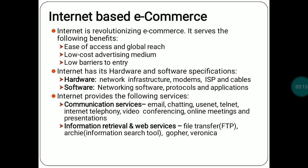For internet, we need some specifications and requirements — hardware and software specifically. In hardware, we need some basic structure for the internet like network infrastructure, modems, ISP, and cables. Whatever we need to facilitate internet access, the hardware is required. For establishing the internet, we need certain software that helps us connect. So networking software are there, then there are certain protocols that we need to follow, and there are certain applications such as websites and browsers that help us reach.